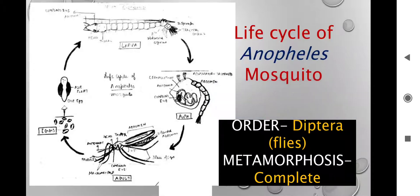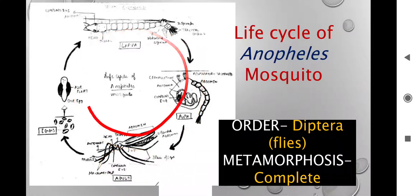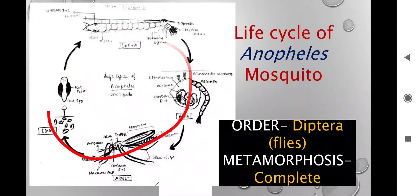The metamorphosis is complete — egg, larva, pupa, and adult. It starts with egg, then larva, then pupa, and the adult — this is the life cycle of Anopheles mosquito, which we will deal with in detail. This cycle is the same in different strains of mosquito, but there are various differences on the basis of which a taxonomist or biologist will differentiate whether this is Anopheles, Culex, Aedes, or any other mosquito.